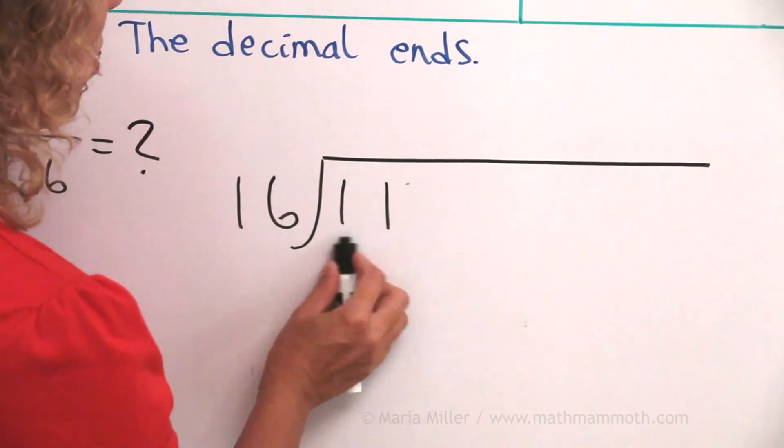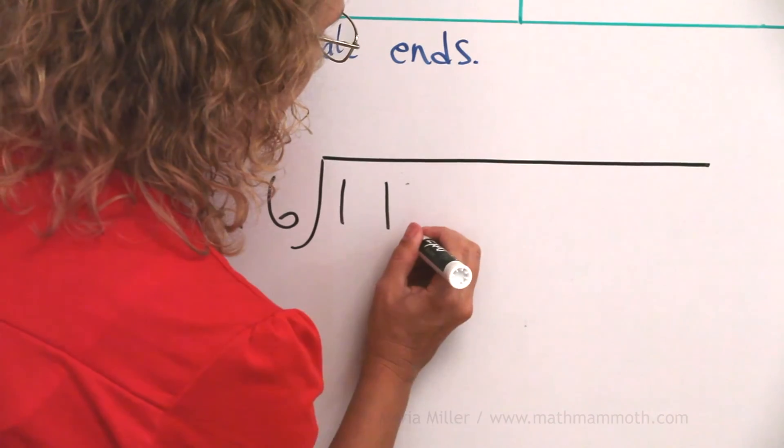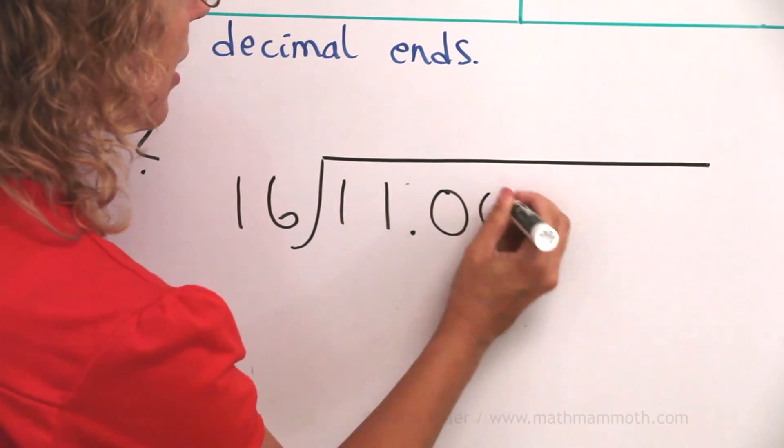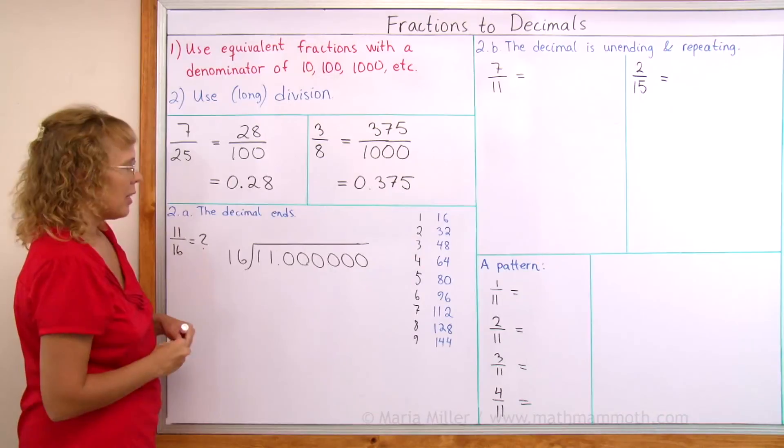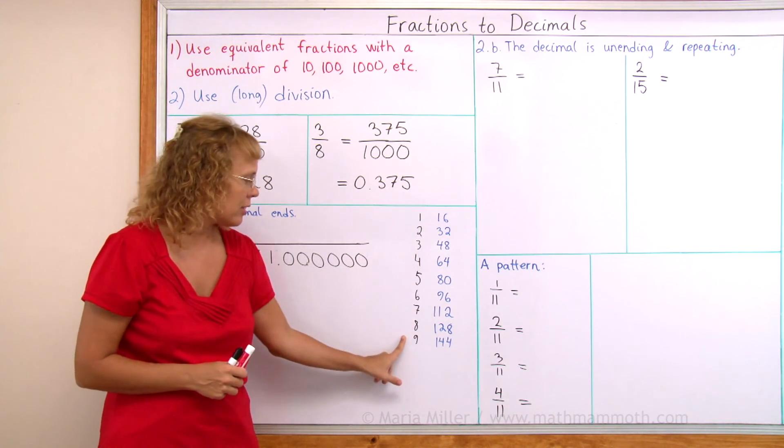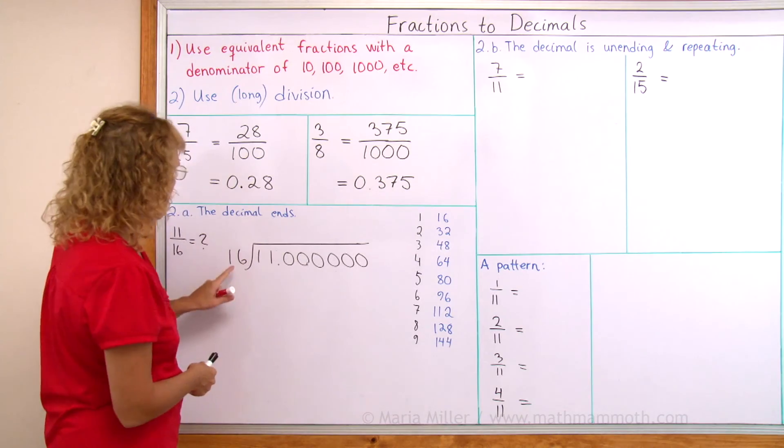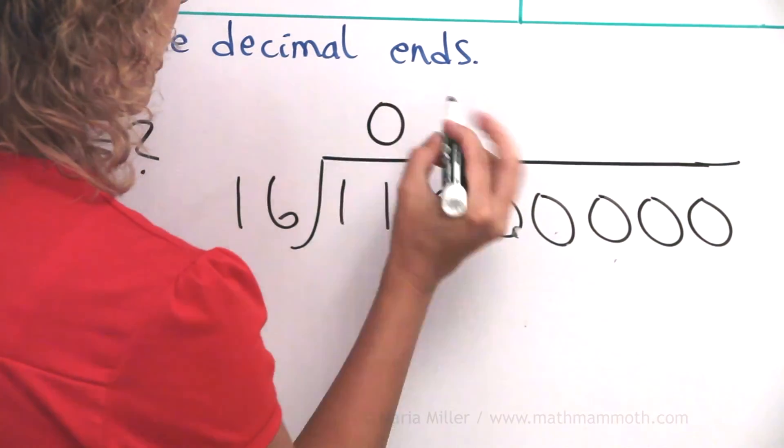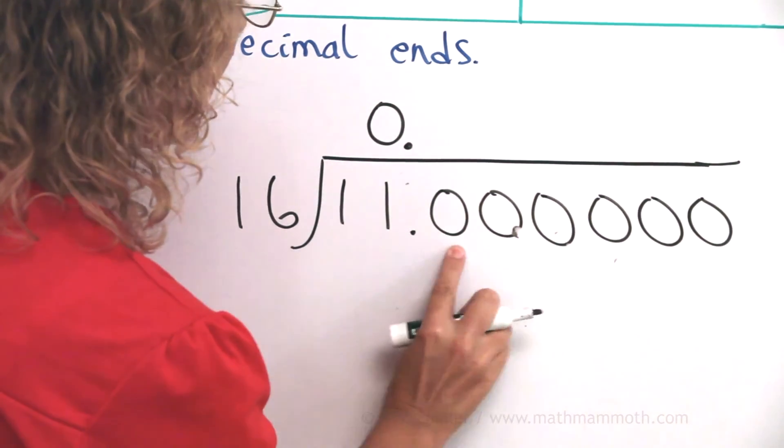Notice that we're going to divide 11 by 16. And now, of course, 16 does not go into 11. So we will write 11 as a decimal number, put lots of decimal zeros here, and then divide. I also wrote the multiplication table of 16 here on the side to help me.